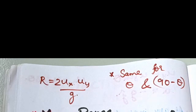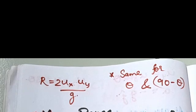The range is the same for complementary angles — 90 minus theta gives the same range as theta, because we can write the range as 2u squared sin theta cos theta by g, which is symmetric about 45 degrees.